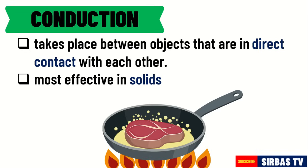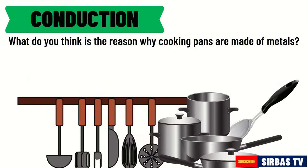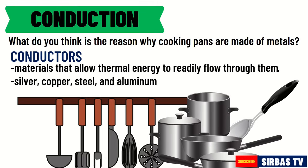We can observe this transfer of energy when cooking. When the bottom of the pan is placed under the fire, the heat energy from the fire will be transferred to the pan, that is why it becomes hot. As the pan becomes hotter, the heat energy will be transferred to the food placed on it — this is the reason why the food gets cooked and becomes hot. Cooking pans are made of metals because they are good conductors of heat. Conductors are materials that allow thermal energy to readily flow through them. Metals like silver, copper, steel, and aluminum are good conductors of heat.